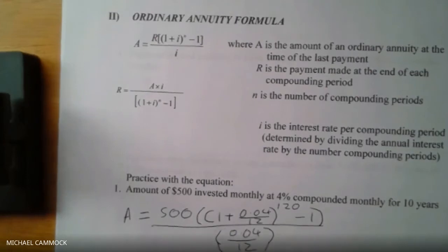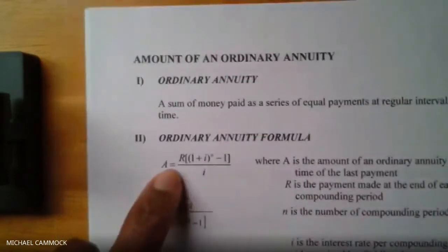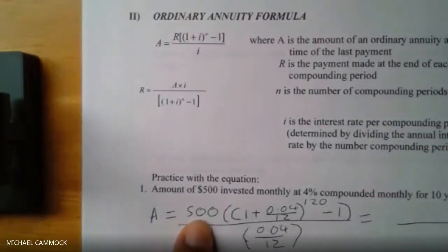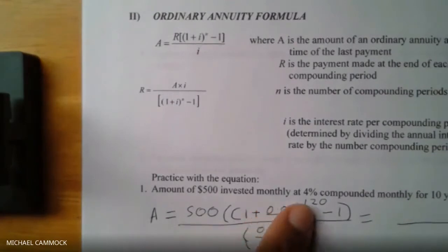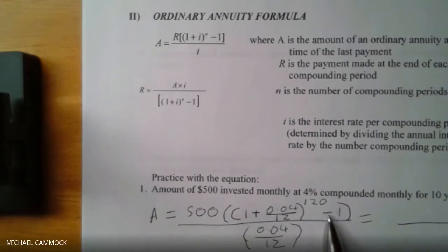All divided by — open another bracket in the denominator — 0.04 divided by 12. I'm going to do this in stages on my calculator: work out the whole top part first, then divide by the bottom. So: 500, two brackets, one plus 0.04 divided by 12, close bracket, raised to the power of 120, then minus one. That gives the numerator.